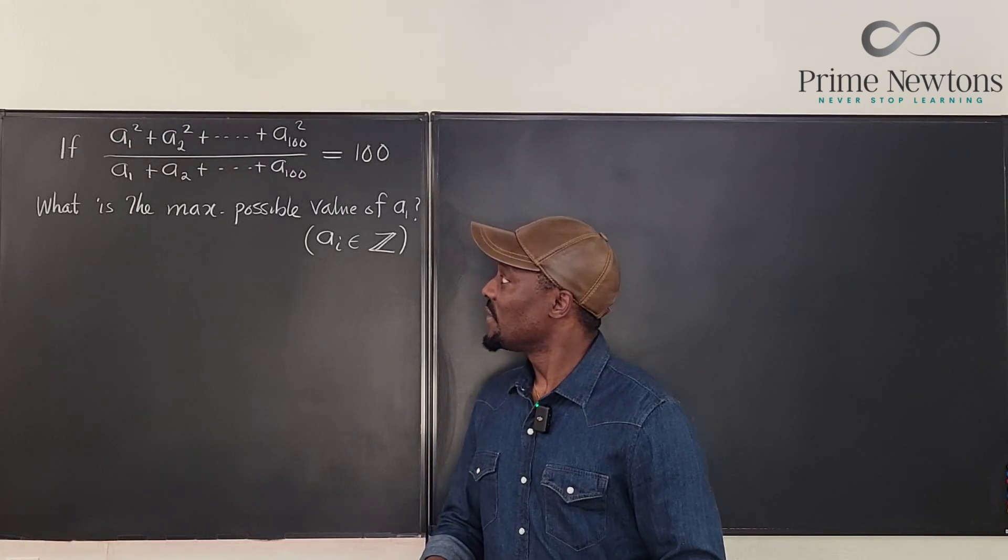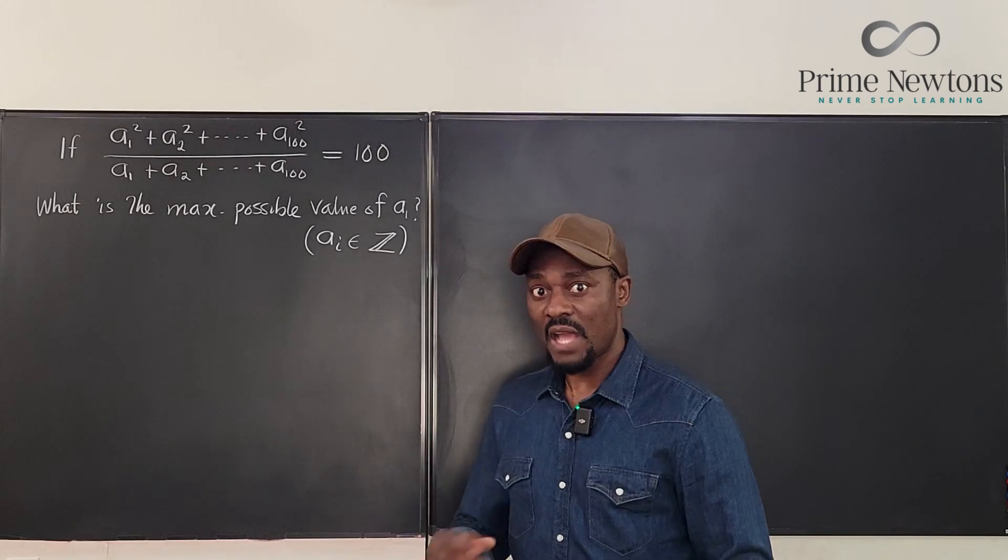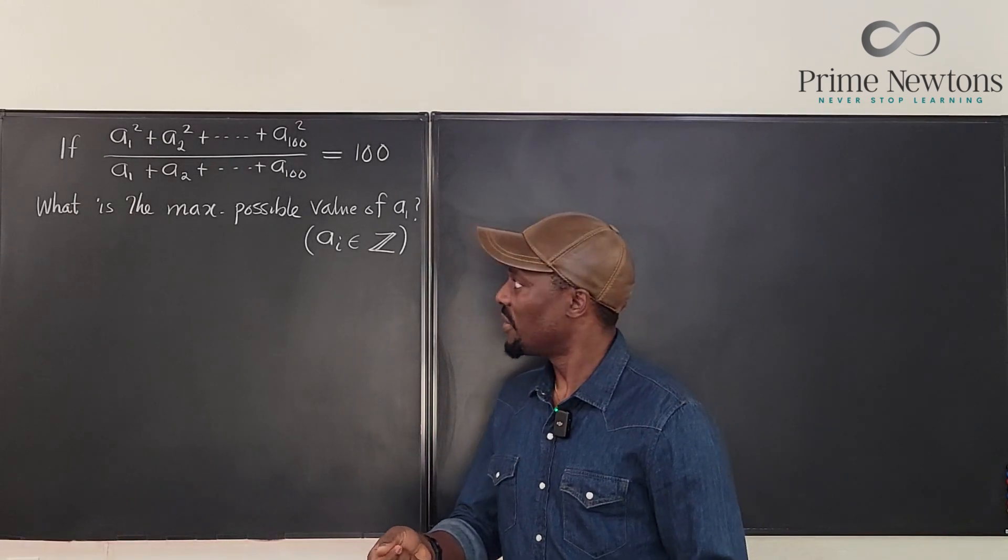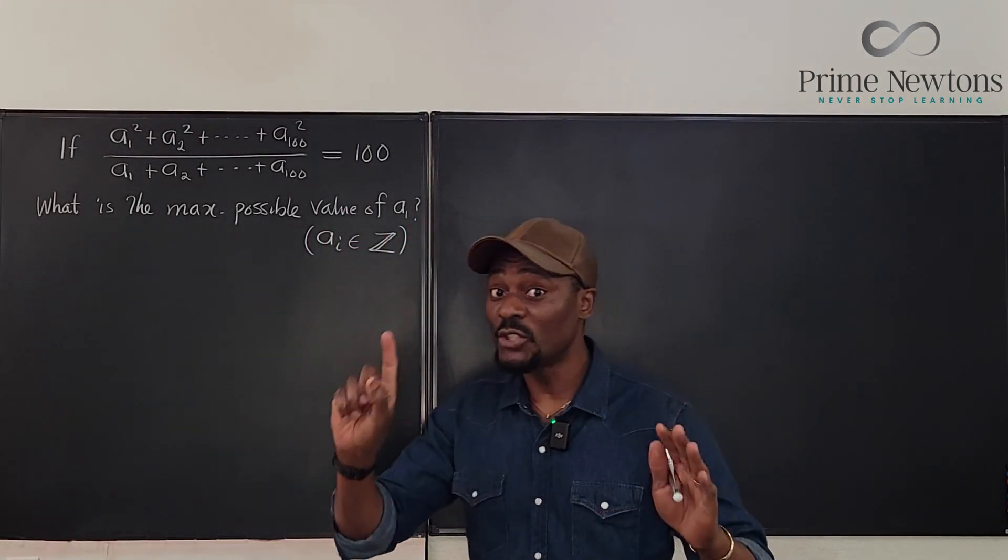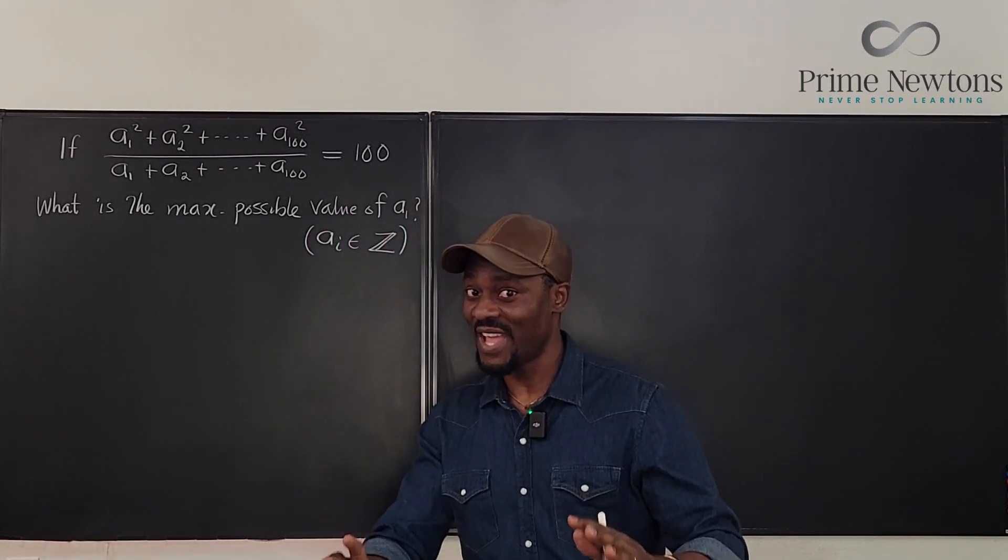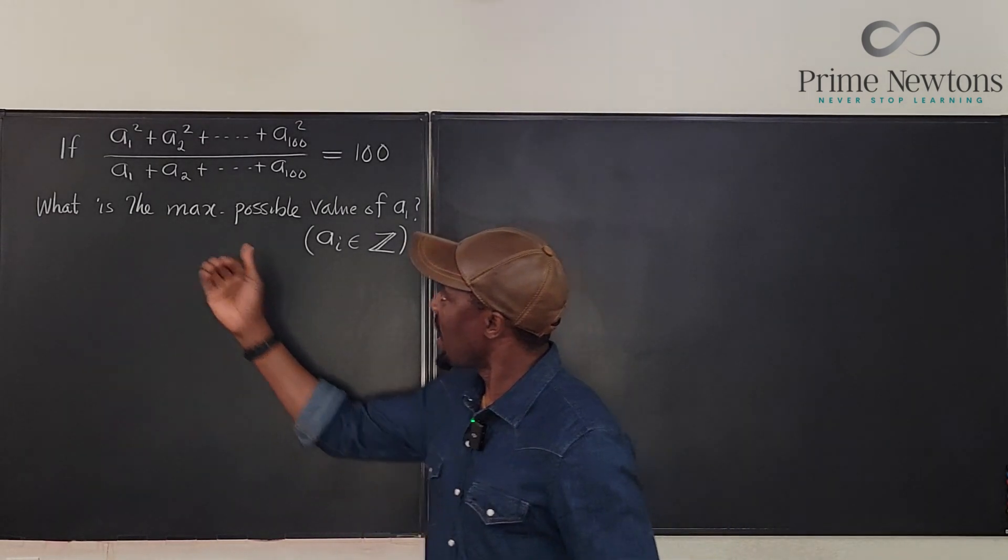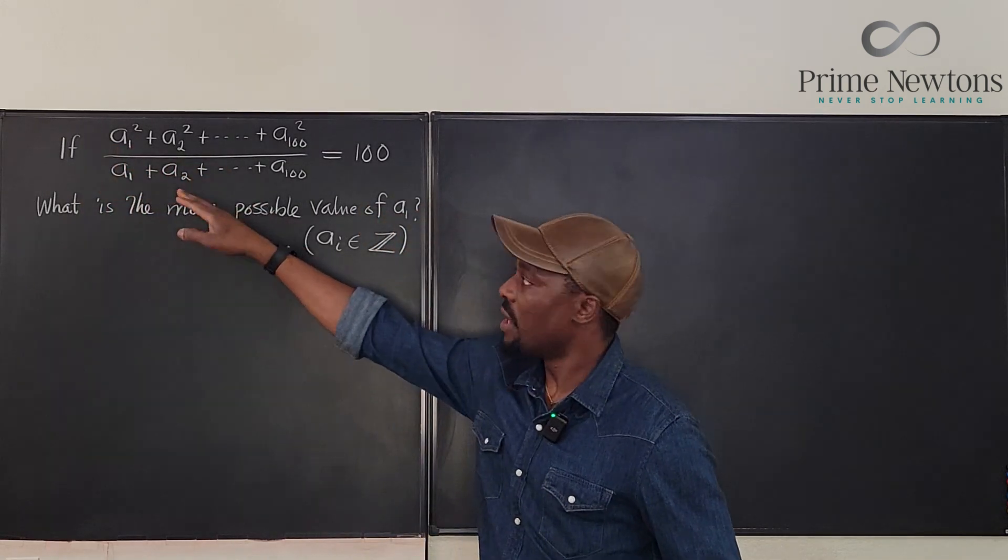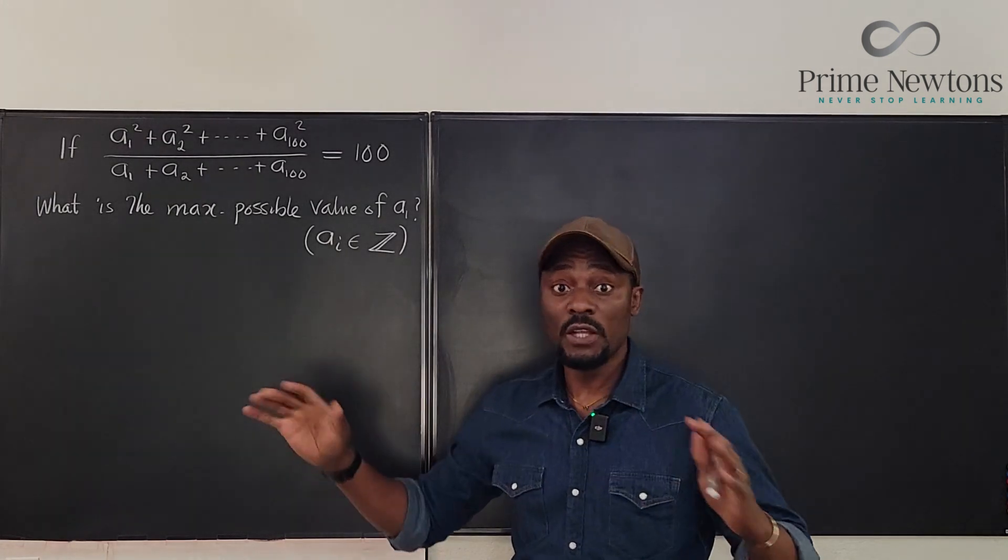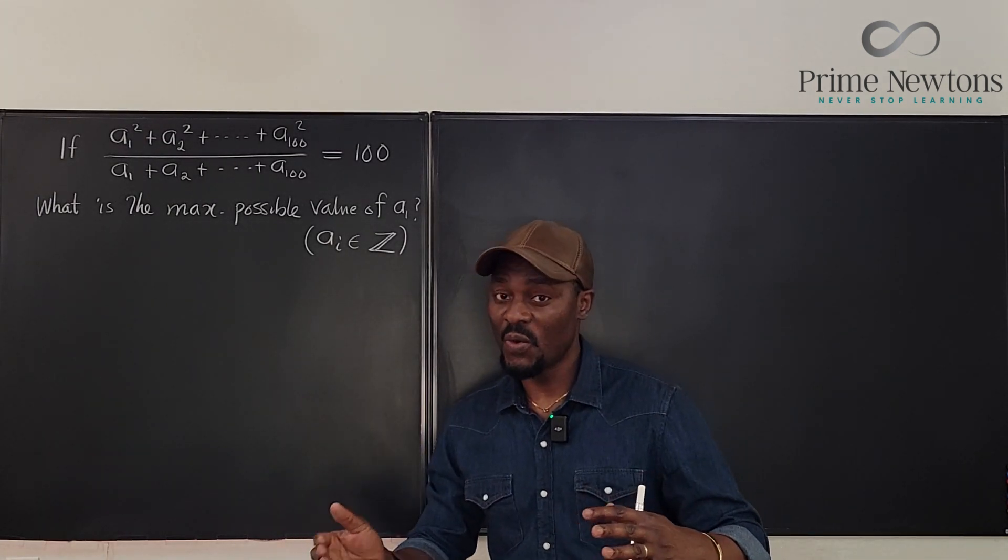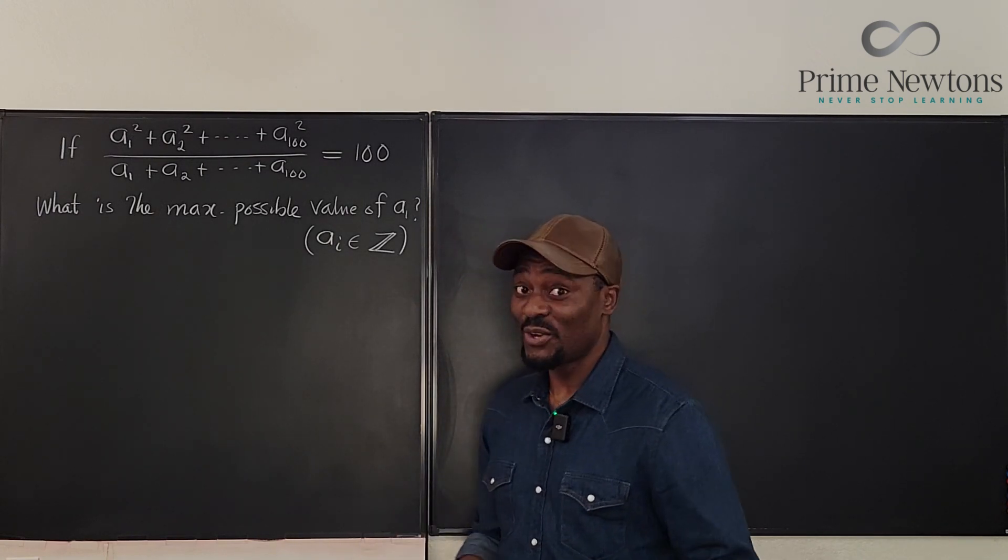And this question, the first time I saw it, I thought I figured out the answer immediately because it looked very easy. But the question actually said, what is the maximum possible value of A sub 1? You must show proof that you got the answer. And that's where I started having questions about what I did.